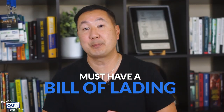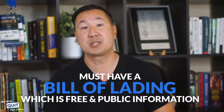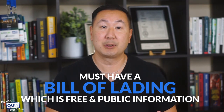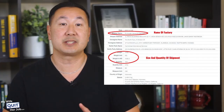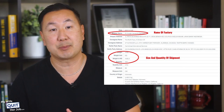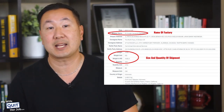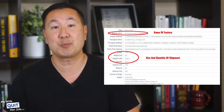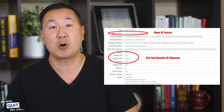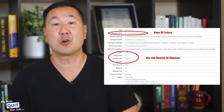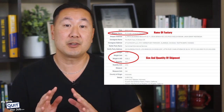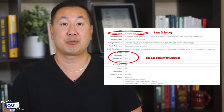Every shipment that passes through a port in the United States must have a bill of lading, which is free and public information. A bill of lading contains important information such as the date of the shipment, the name of the factory, the factory address, the retailer name, the shipment weight, shipment quantity, country of origin, and other detailed shipping parameters.